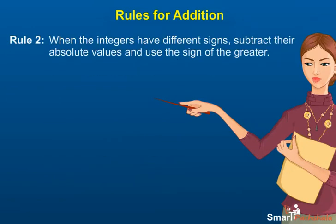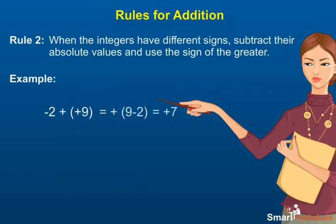Rule 2: When the integers have different signs, subtract their absolute values and use the sign of the greater. For example, the sum of minus 2 and plus 9 will be plus 7. The sum of plus 2 and minus 9 will be minus 7.